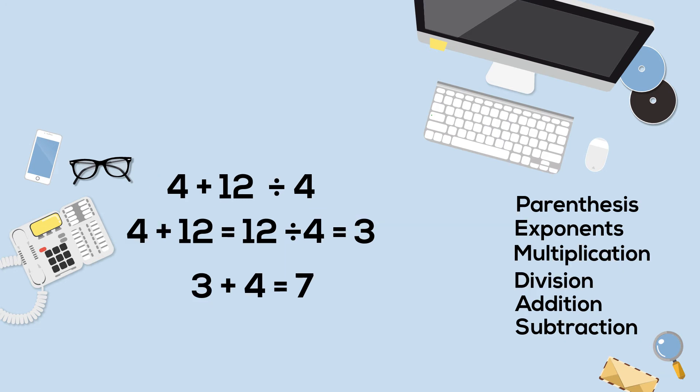However, the correct answer is 7. If you follow the correct order, you complete division first. 12 divided by 4 equals 3. Then addition, which is 3 plus 4 equals 7.